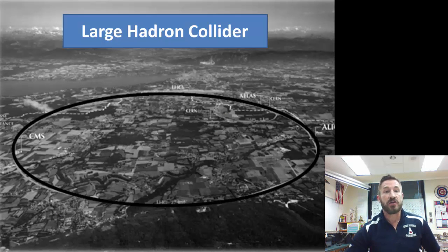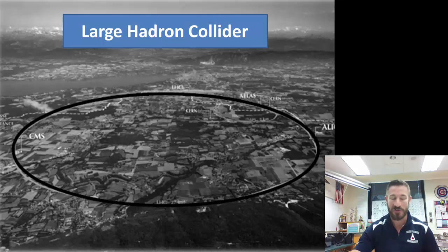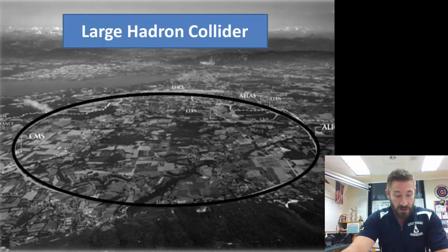CERN has the largest particle collider, the Large Hadron Collider, the world's largest and most powerful particle collider. It was built by the European Organization for Nuclear Research by over 10,000 scientists and engineers from over 100 countries. From this they were able to identify a new particle called the Higgs boson.